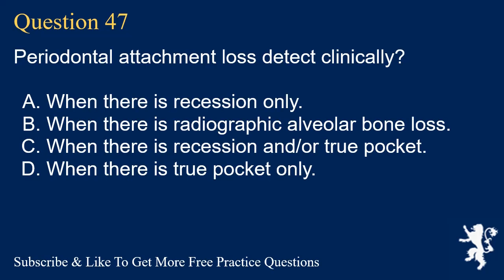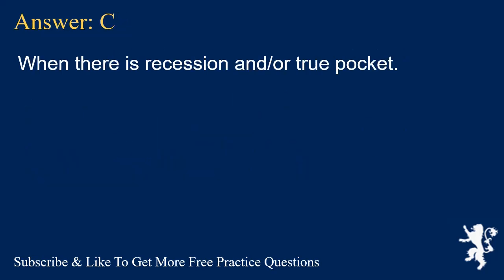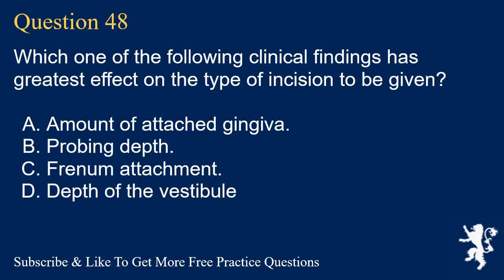Question 47. Periodontal attachment loss is detected clinically? A. When there is recession only. B. When there is radiographic alveolar bone loss. C. When there is recession and/or true pocket. D. When there is true pocket only. Answer: C. When there is recession and/or true pocket.